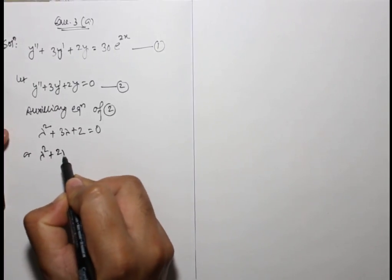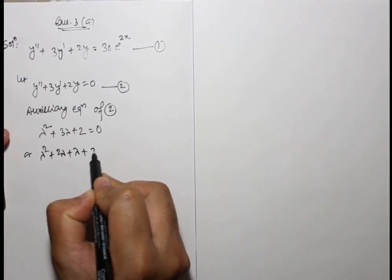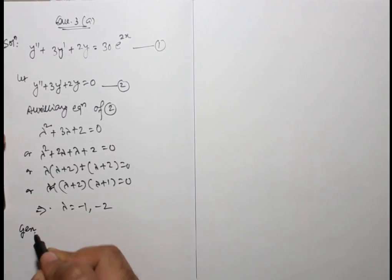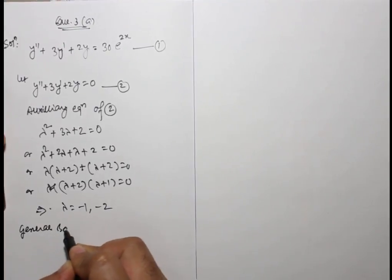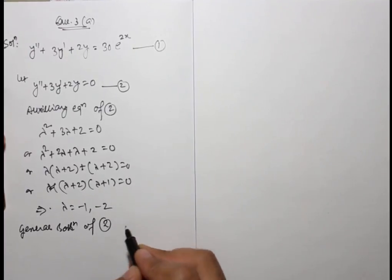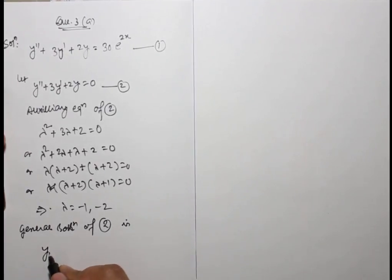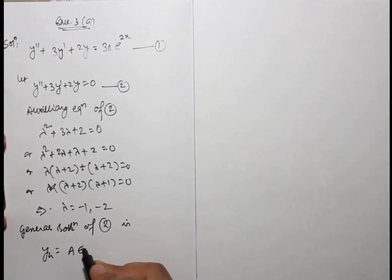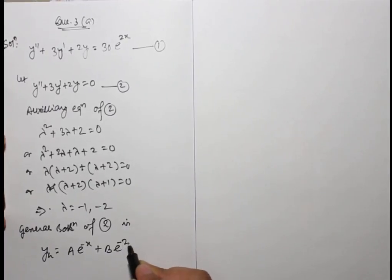Lambda squared + 2lambda + lambda + 2 = 0. The general solution of the homogeneous part, also known as the complementary function, is: y_c = A·e^(-x) + B·e^(-2x).